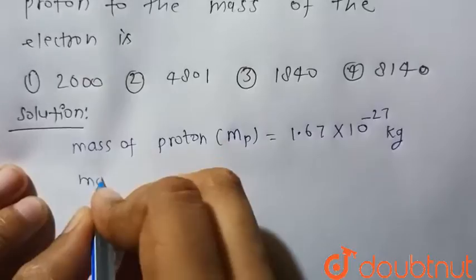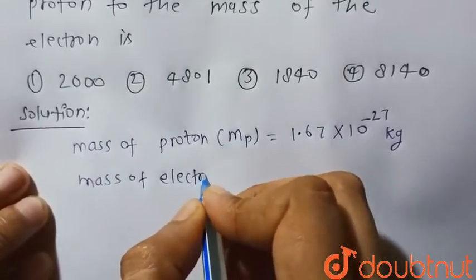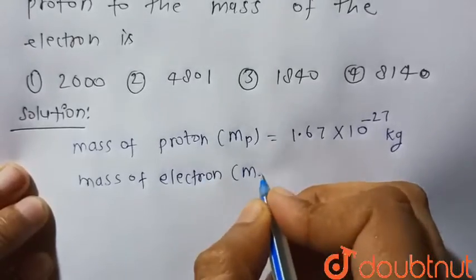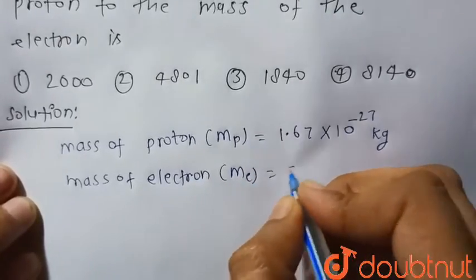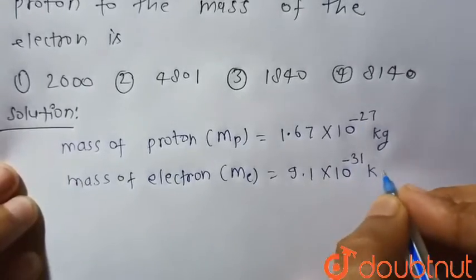And we know that mass of electron, let's say Me, is equal to 9.1 × 10^-31 kg.